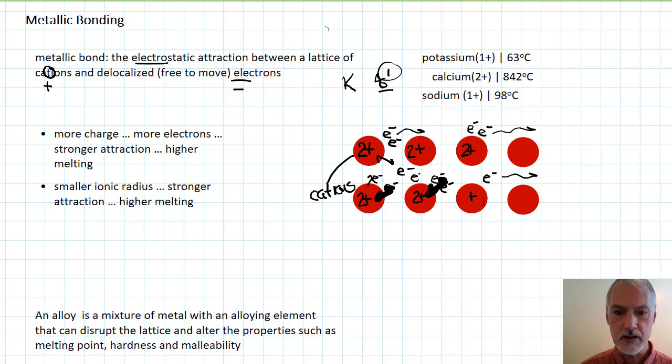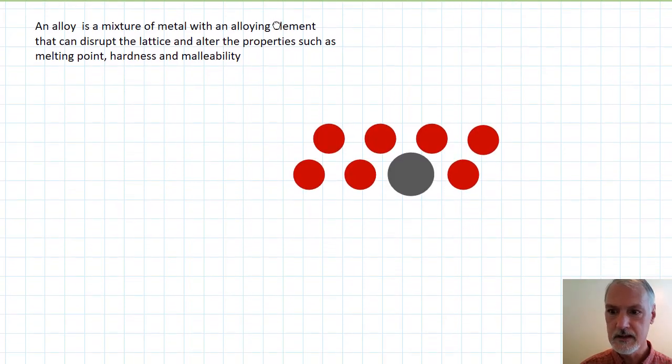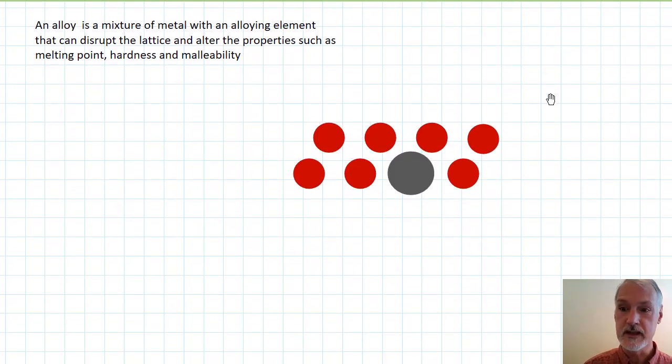We can alter the properties of our metal by introducing another substance to our metal, thereby changing it into something called an alloy. An alloy is a mixture of metals, and the addition of a metal alters the properties. Here are some common alloys.